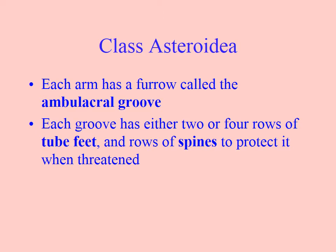The arms have a groove called the ambulacral groove. Ambula means mobile — so if somebody's ambulatory, that means they can walk themselves. The groove has rows of two feet from the water vascular system and spines to protect it.